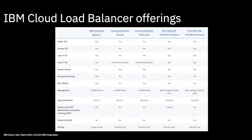This table gives a bit more information about the different features available in each load balancer offering. The load balancer types are across the top and features down the left-hand side. They all support public and private address routing, layer 4 and layer 7 routing, and health checks. The IBM Cloud load balancer does horizontal scaling, whereas the others don't. They all do SSL offloading. Management is via the IBM portal for the IBM Cloud load balancer and the local load balancer, but with the Citrix Netscalers it's self-managed via the vendor GUI — you log into the appliance and manage it from there.